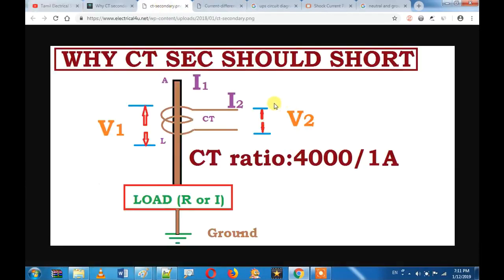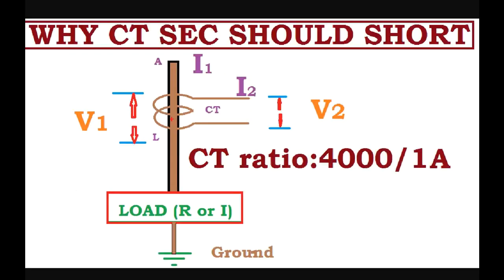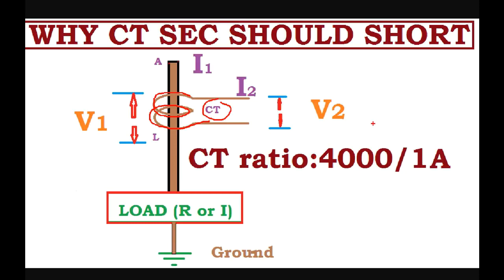Let's talk about a simple experiment. We take a line and connect a current transformer. For example, let's do a CT open circuit test with a 4000/1 transformer. The I1 is the primary current — 4000 amps — and I2 is the secondary, which is 1 amp. That is the 4000/1 ratio.